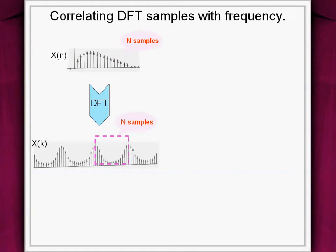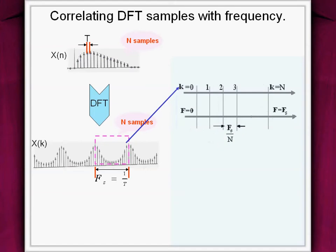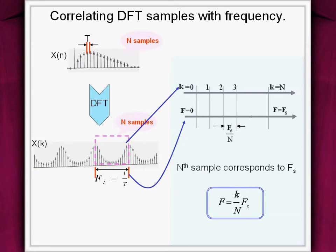DFT provides information over discrete number of frequencies, so we need to correlate precisely which frequencies these are. The discrete signal and its DFT having N samples each is shown. If the spacing between the samples in x(n) is t, then these N frequency samples reside in the frequency range between 0 to fs, where fs is called the sampling frequency. As seen with total N samples in DFT and the frequency stuck between 0 to fs, we can associate that spacing between each frequency sample as fs by N. Thus, with the Nth sample corresponding to sampling frequency, each sample corresponds to a frequency of fs by N times k.